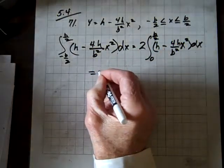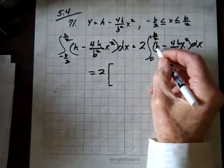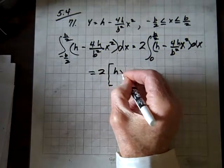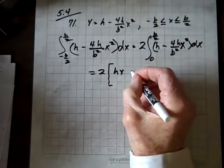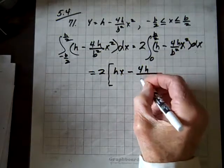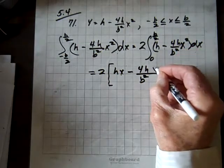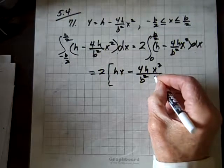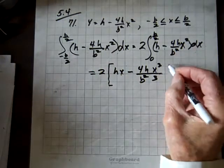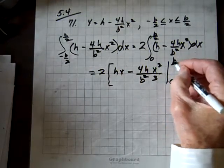Now let's integrate that, and we have 2, and the integral of h is going to be hx, and then we have minus 4h b squared, and we're going to get an x cubed over 3. Integral of x squared is x cubed over 3. Good.